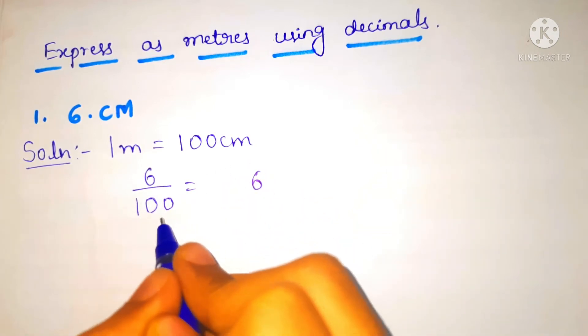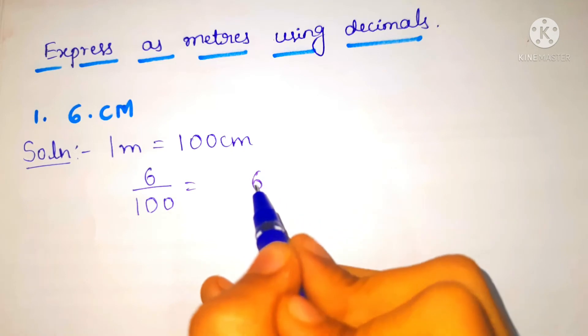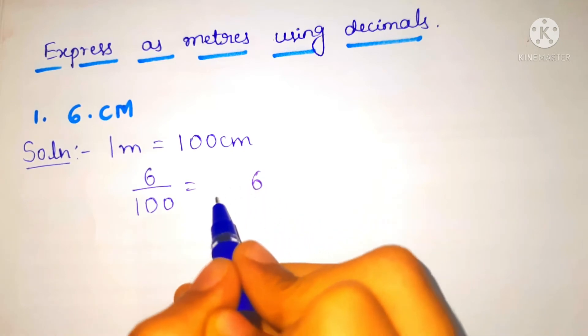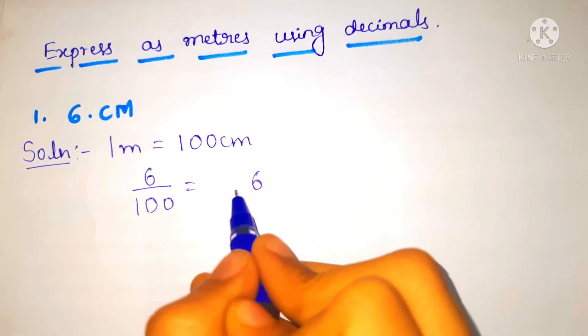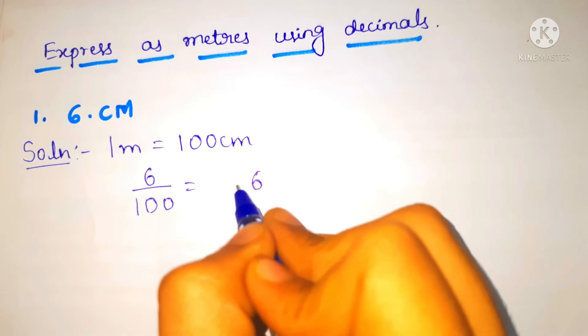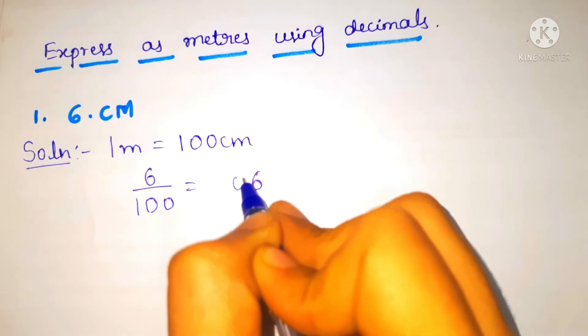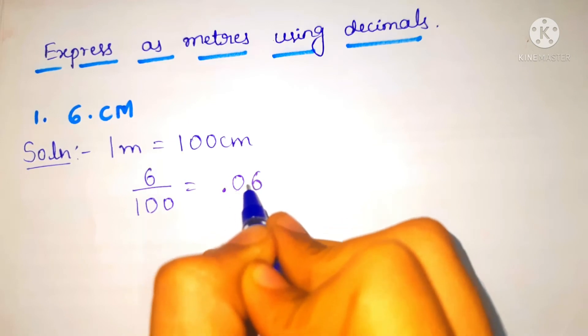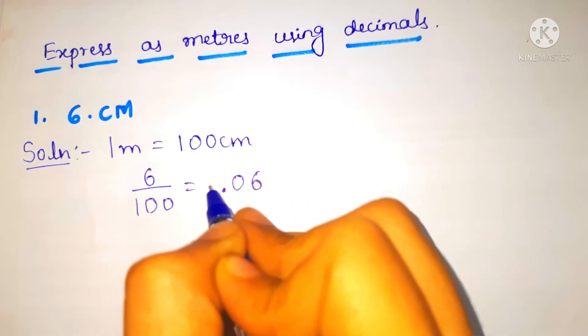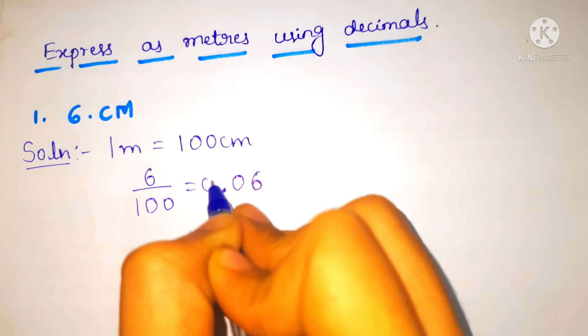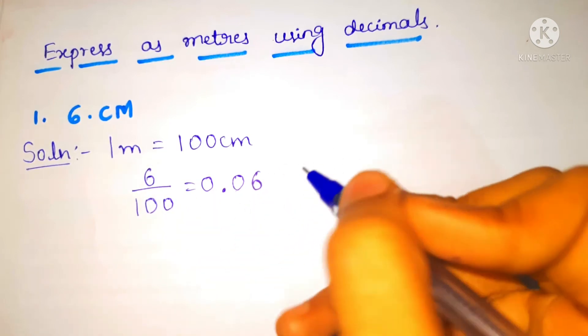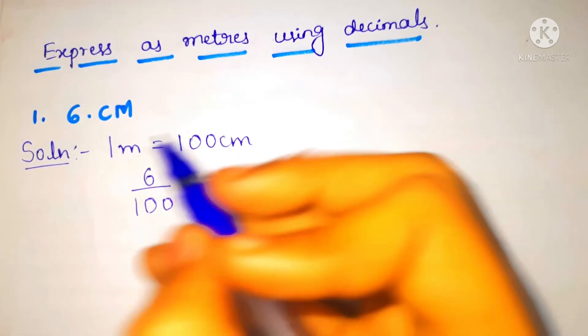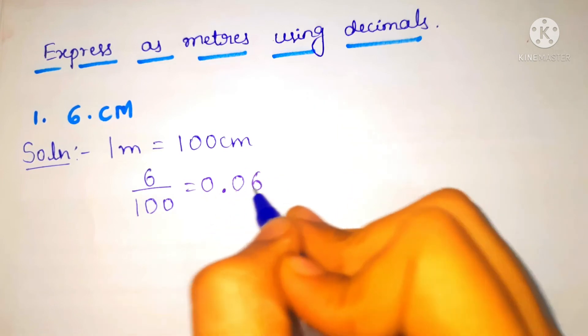We have to count two digits and put point. One, two. So here we do not have any digits so we'll put zero. One, two, we'll put point here and there should be any digit before the point, we'll put again zero. So 6 centimeter is equal to 0.06 meter.